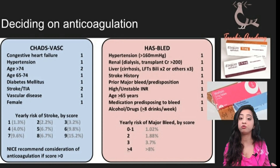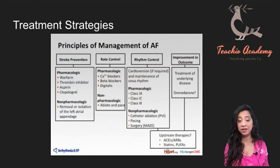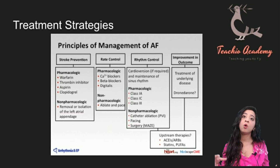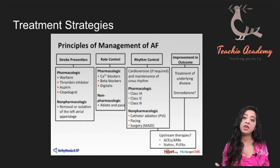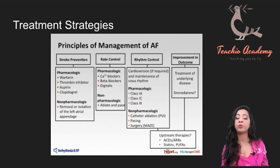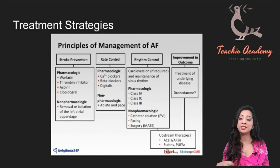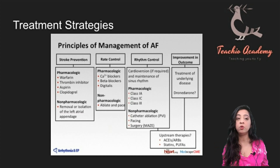The things that will correct or control AF are rate control or rhythm control. Rate control means the patient is in AF running very fast — say at 150 — and you slow it down to 80, but they still remain in AF. Rhythm control means you flip a patient from AF at a rate of 150 into sinus rhythm, correcting the AF so the P wave comes back.